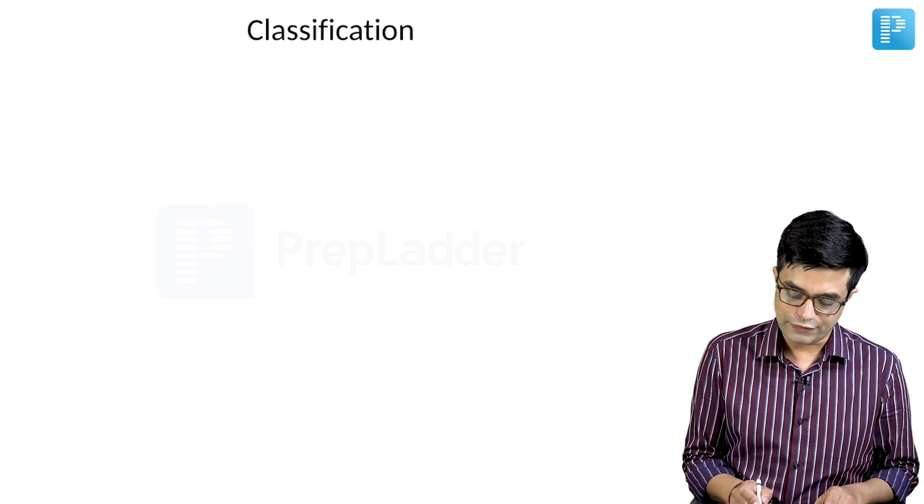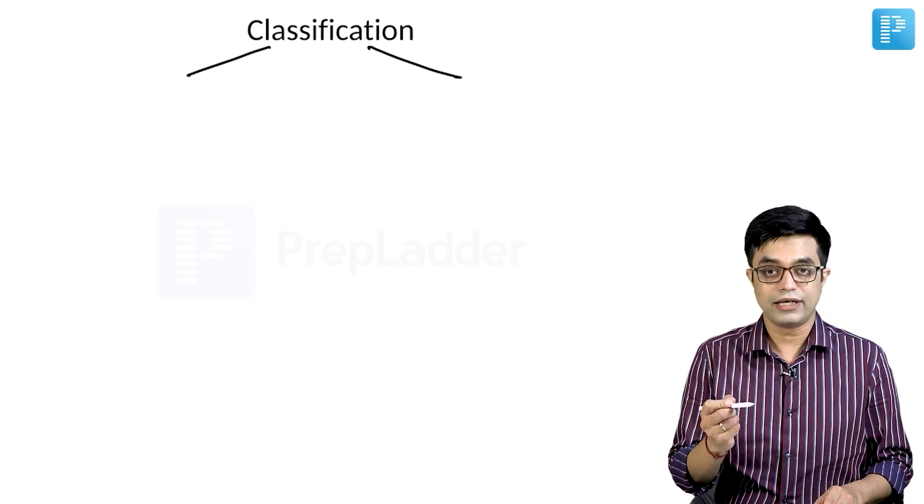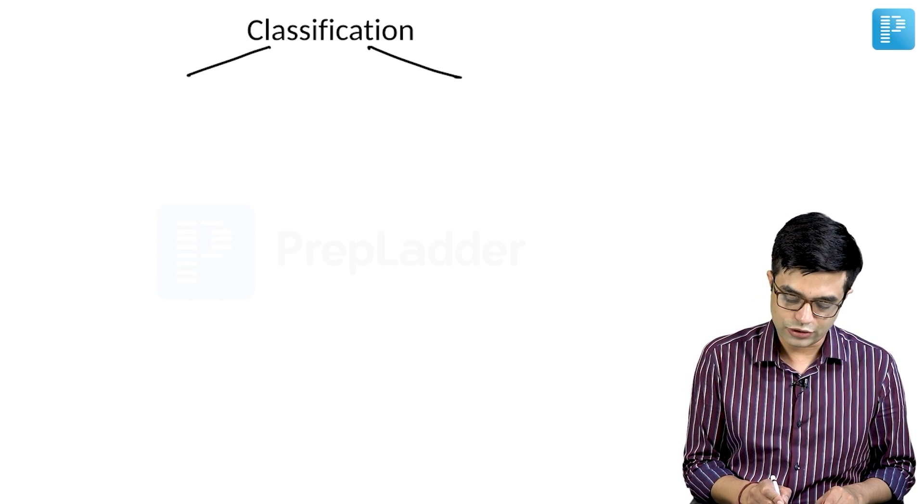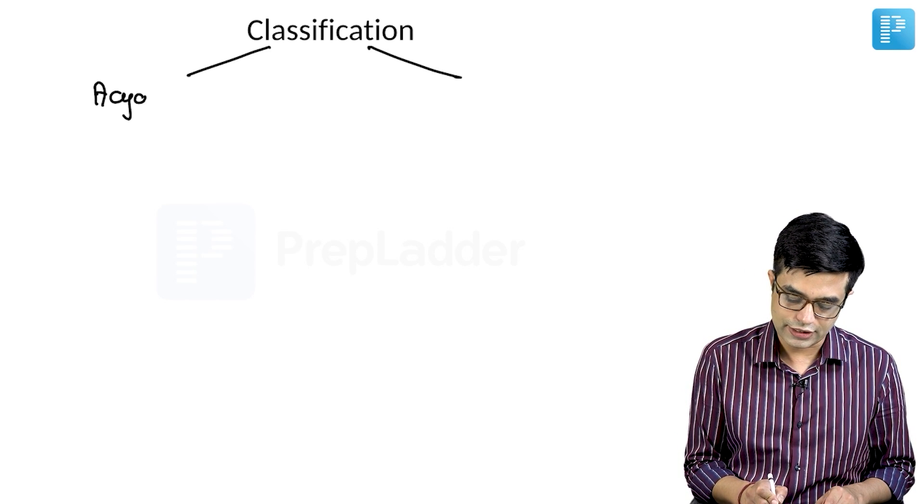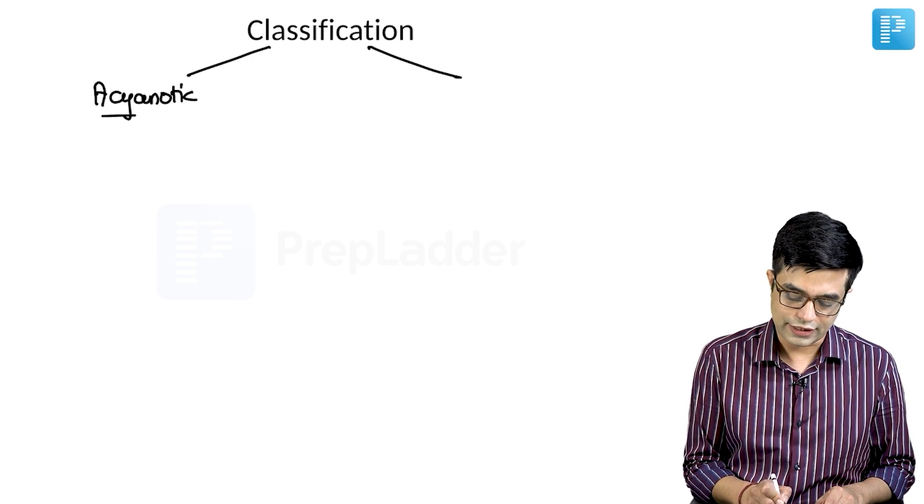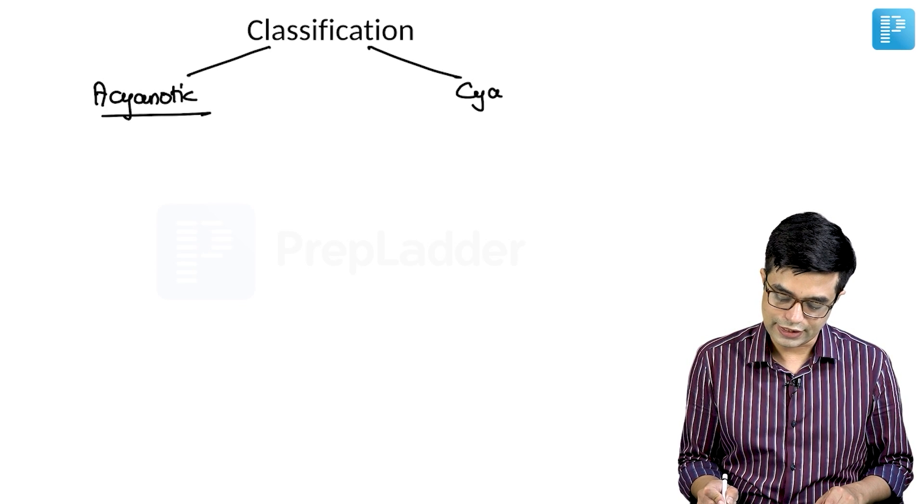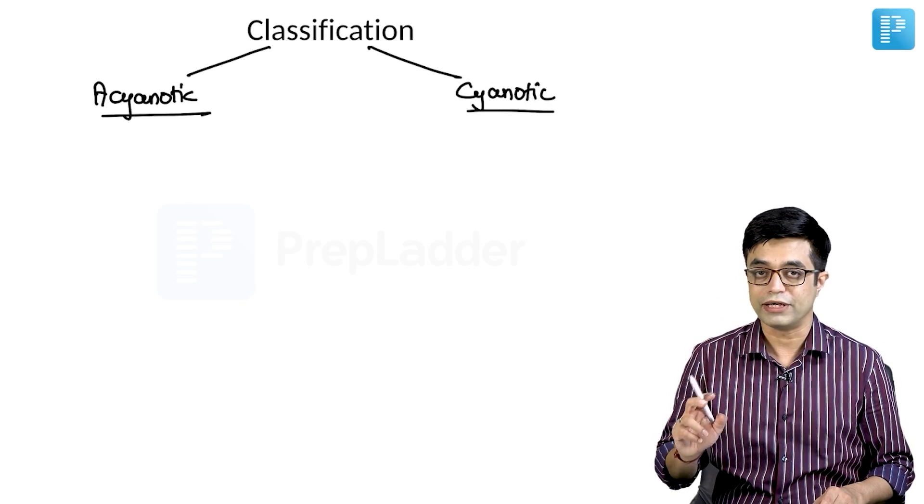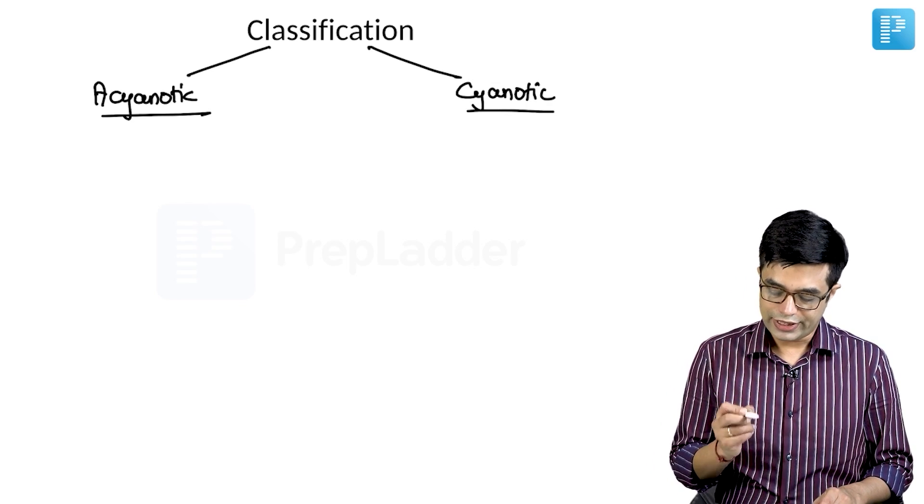So as I said, the easiest way to classify is to divide the congenital heart disease into two parts. Either there is no cyanosis, we call them acyanotic heart disease, or there is cyanosis, that is cyanotic heart disease. When I say cyanosis, I mean central cyanosis and not peripheral cyanosis.